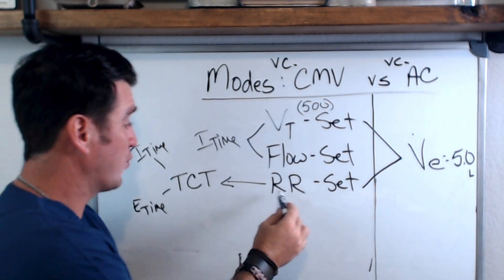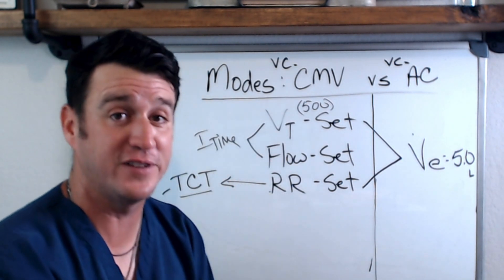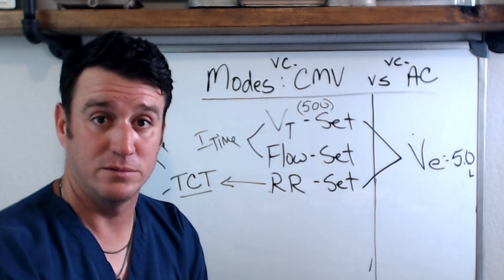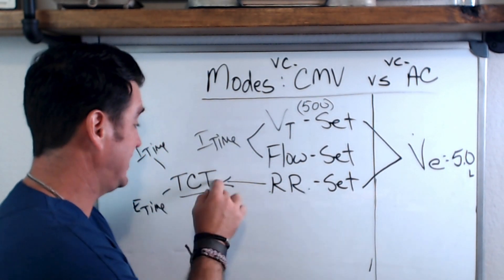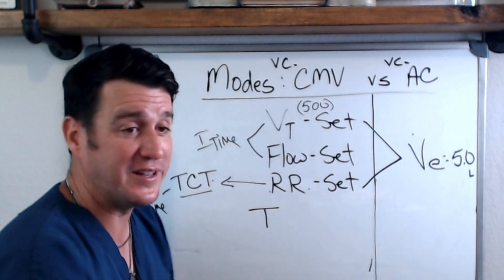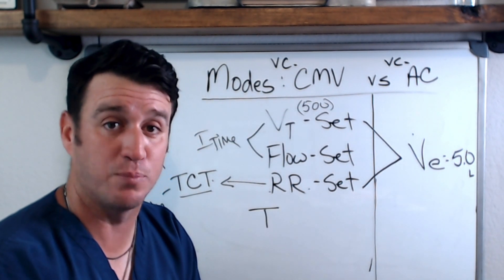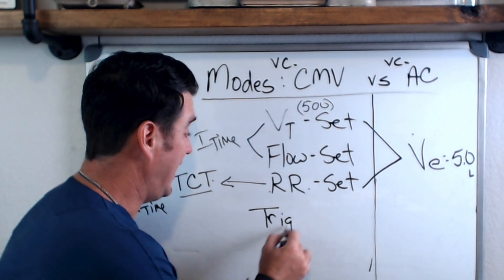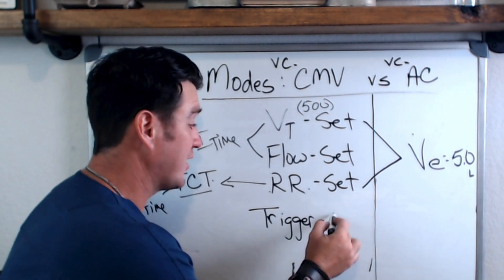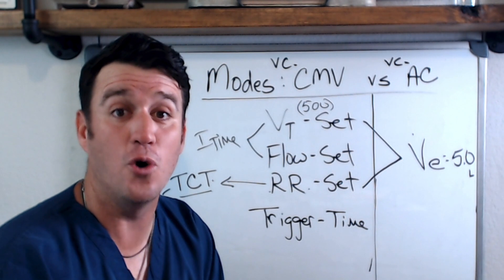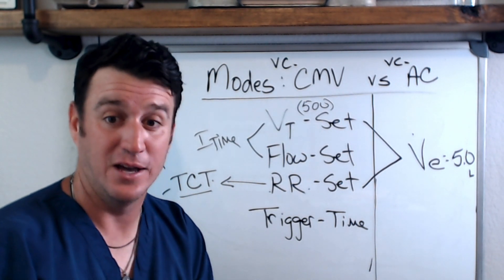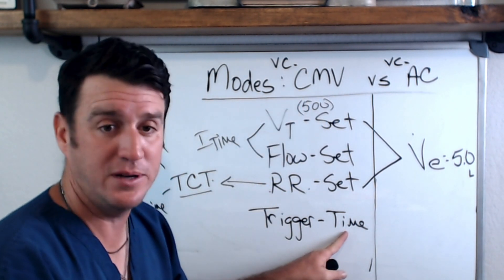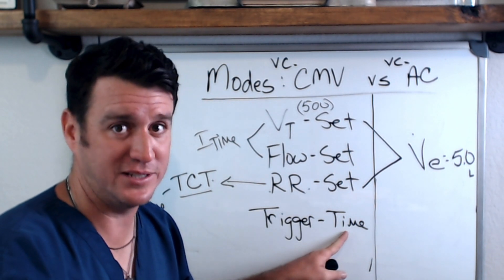Respiratory rate establishes total cycle time, which tells the ventilator how often to initiate inspiration. On a rate of 10 with a 6-second total cycle time, the trigger is time — and in CMV, our trigger is time and only time. Remember that — it's key and will make sense in just a moment.